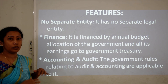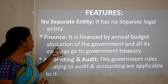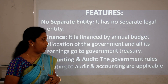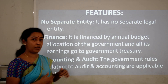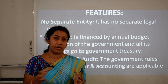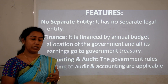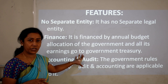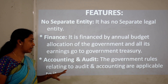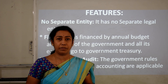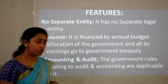Features of departmental undertakings: First, they have no separate legal entity or existence other than government. Second, their finance is done through annual budget allocation — all funds come from government only, and all earnings go to the government treasury as revenue. Third, government rules relating to audit and accounting are fully applicable to them.